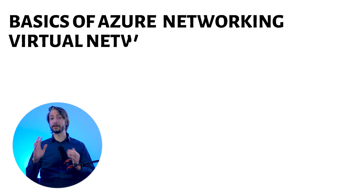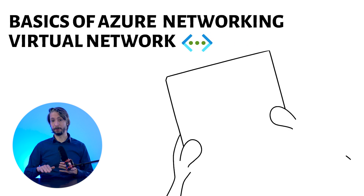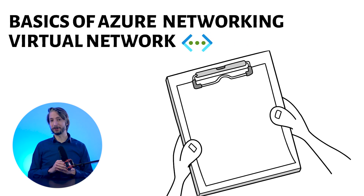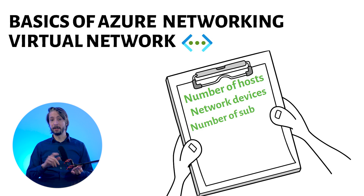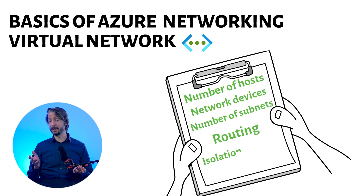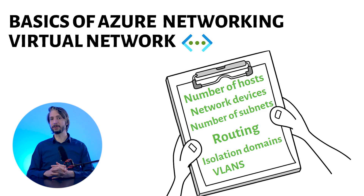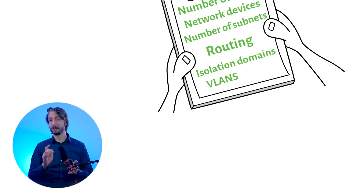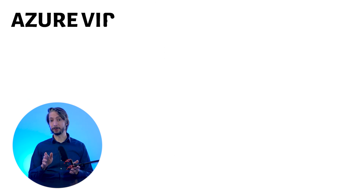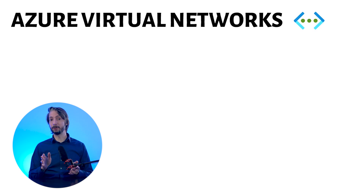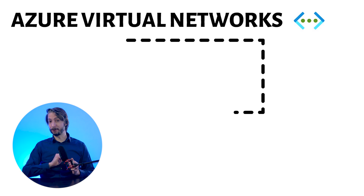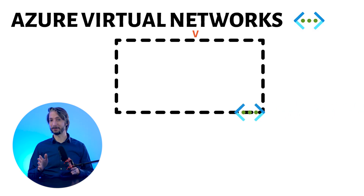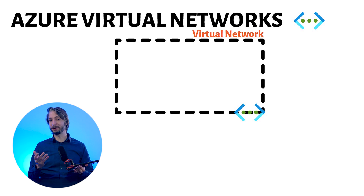We have the virtual network. When you design a network from the bottom up, you gather some basic information. This information could be the number of hosts, network devices, number of subnets, routing between subnets, and isolation domains such as VLANs. This information helps in sizing the network and security devices, as well as creating the architecture to support applications and services. When you plan to deploy your applications and services in Azure, you will start by creating a logical boundary in Azure, called a virtual network, which is akin to a physical network boundary.